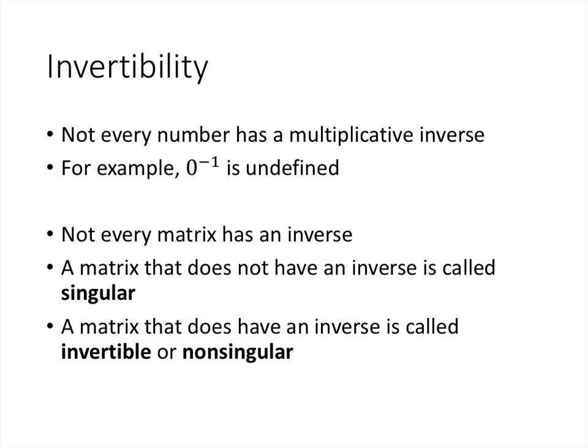Not every number has a multiplicative inverse — the multiplicative inverse of 0 is undefined. There's no number we can multiply by 0 to get 1. Similarly, not every matrix has an inverse, and there are a whole lot of non-invertible matrices. A matrix that doesn't have an inverse is called a singular matrix, or non-invertible. A matrix that does have an inverse is called invertible, or non-singular.